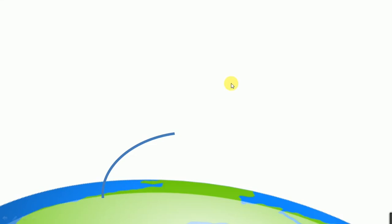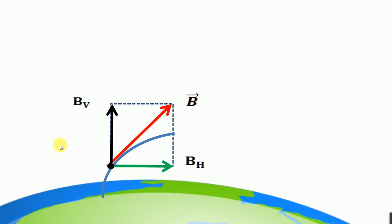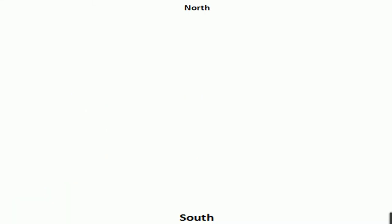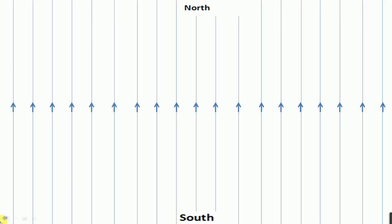This is the portion of the earth, and we have the magnetic field of the earth here. It can be resolved into two components: one is the vertical component and one is the horizontal component. The horizontal component is parallel to the surface of the earth. If you consider a place on the earth, then the magnetic field lines will go from south pole to north pole, because we have magnetic north at the south pole of the earth.